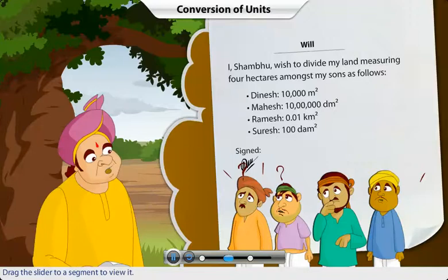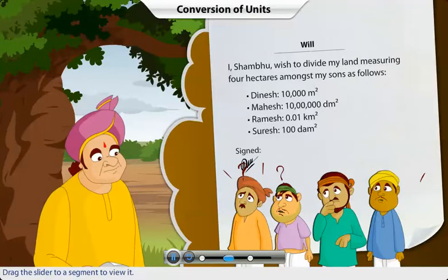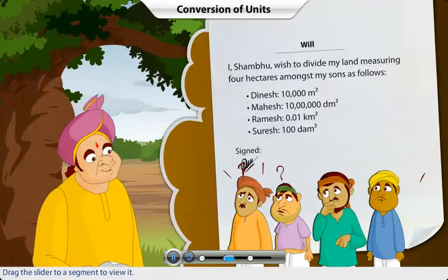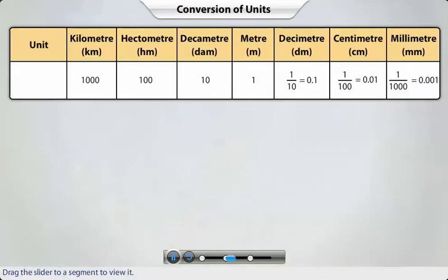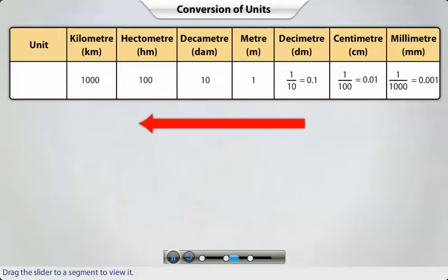The wise man said: your father has divided the land equally — let me explain to you how. Look at this table. These are the standard units of measurement of length; it's called the metric system. A unit of measure is ten times more than the unit to its right, but ten times less than the unit to its left.